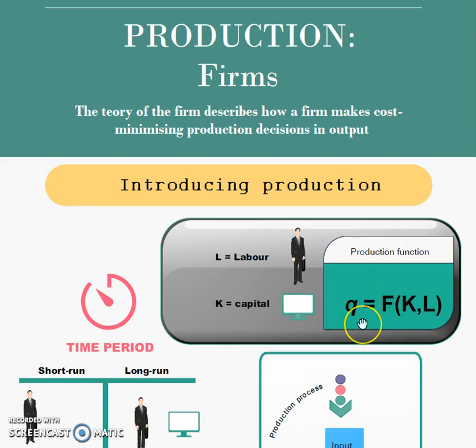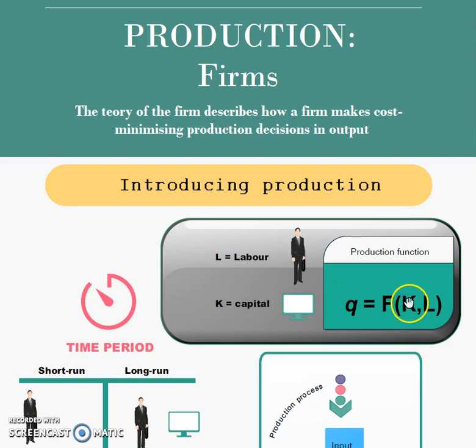The total number of goods that are produced, given a set number of inputs and a combination of the inputs, can be illustrated by means of a production function. The total output is a function of the number of capital and the number of labor that we put into this equation, or into this system, and that will then produce our quantity.